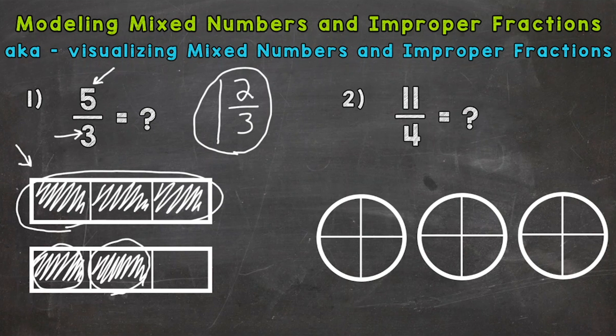Five-thirds is equivalent to one and two-thirds — they hold the same value. One's an improper fraction and one's a mixed number. You do not need to draw a model in order to go from an improper fraction to a mixed number. I have another video that shows how to do that — I'll drop that down in the description. This video is about modeling mixed numbers and improper fractions.